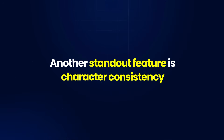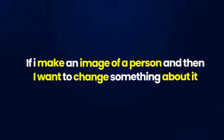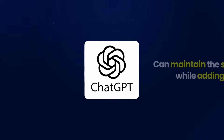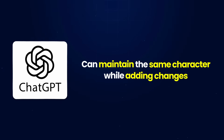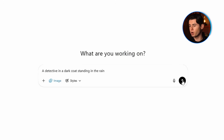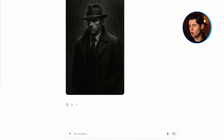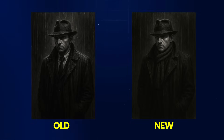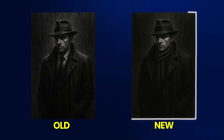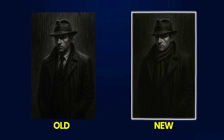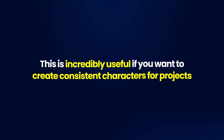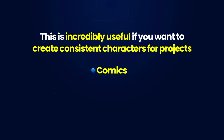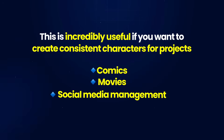Another standout feature is character consistency. If I make an image of a person and then want to change something about it, ChatGPT can maintain the same character while adding changes. I'll create a simple portrait — 'a detective in a dark coat standing in the rain' — and then modify it by saying 'keep everything the same, but just add a scarf.' ChatGPT keeps the same face, body, and overall look exactly the same, and just adds the new accessories on top. This is incredibly useful for creating consistent characters for projects like comics, movies, or even social media.